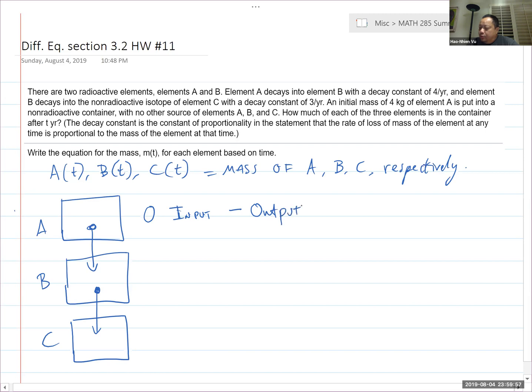So it has zero input and it does lose some to output. B has some input minus some output, and C has an input only minus no output.